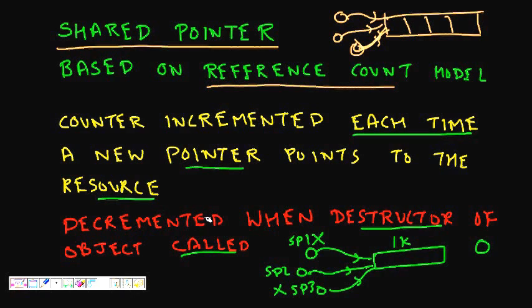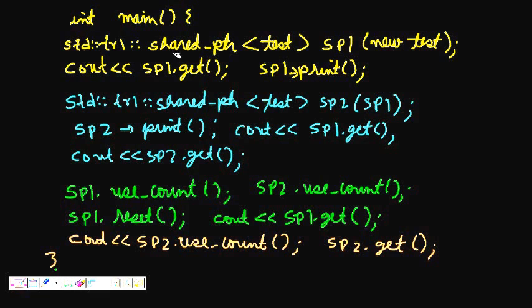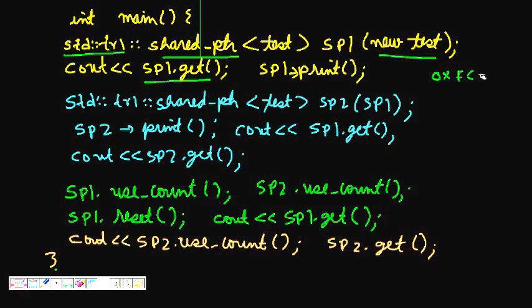Shared pointer behaves like proper C++ because copying and assignment are both supported, which are the two major basics of C++. To use shared pointer we write std::tr1::shared_ptr<Test> sp1(new Test). Calling sp1.get() gives the memory address, say 0xfc3412. Calling sp1->print() prints 'test print'.